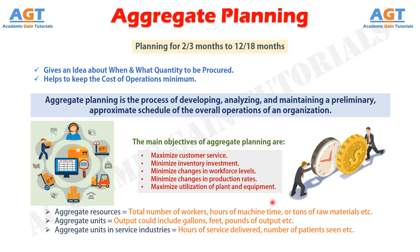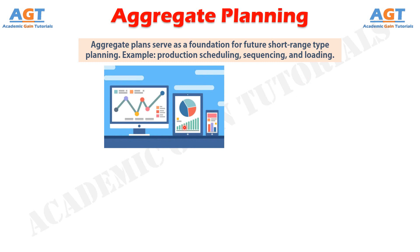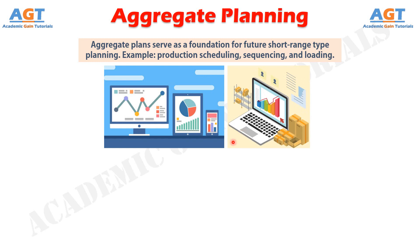When units of aggregation are difficult to determine — for example, when the variation in output is extreme — equivalent units are usually determined. These equivalent units could be based on value, cost, worker hours, or some similar measure. Aggregate planning is considered to be intermediate term in nature, as opposed to long or short term. Hence, most aggregate plans cover a period of 3 to 18 months. Aggregate plans serve as a foundation for future short-range type planning, such as production scheduling, sequencing, and loading. The master production schedule (MPS), used in material requirements planning (MRP), has been described as the aggregate plan disaggregated.